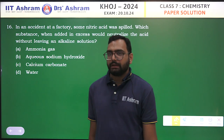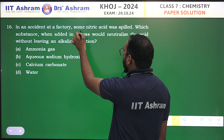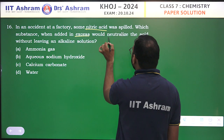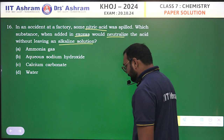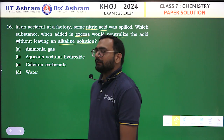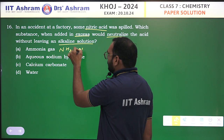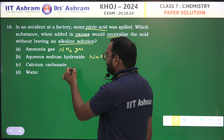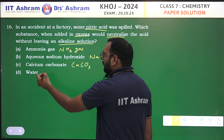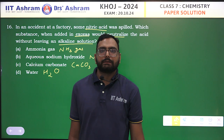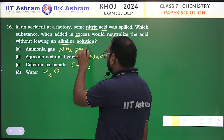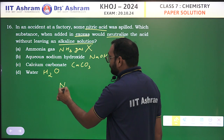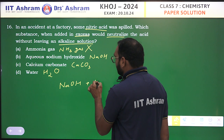Let's see question number 16. In an accident at a factory, some nitric acid was spilled. Which substance when added in excess would neutralize the acid without leaving an alkaline solution? Options are: ammonia gas NH₃, aqueous sodium hydroxide NaOH, calcium carbonate CaCO₃, and water H₂O. Ammonia gas in a factory setting is not a good option. NaOH can react with HNO₃ — we can consider option B.